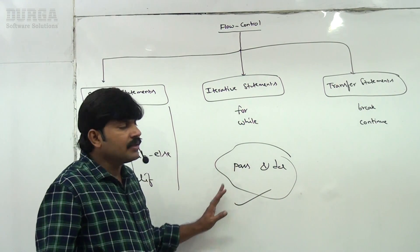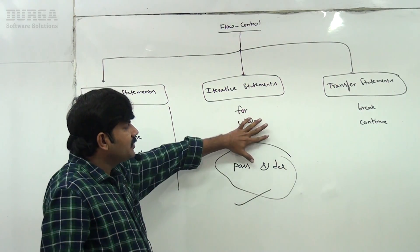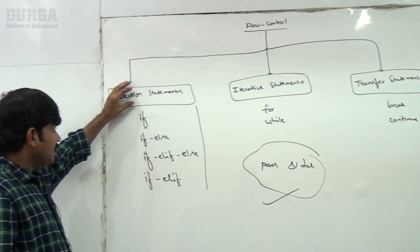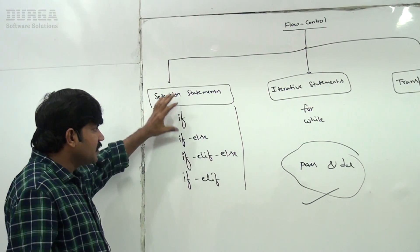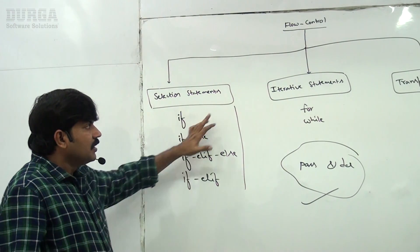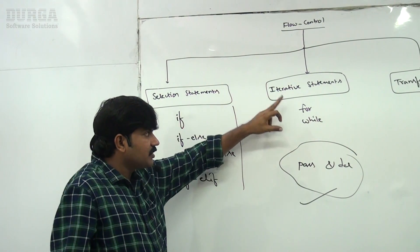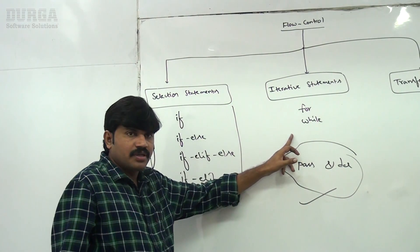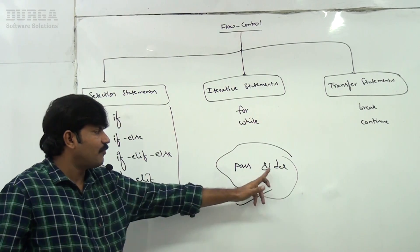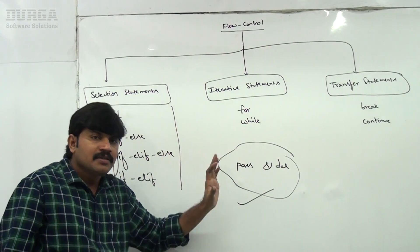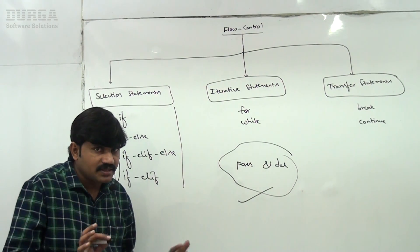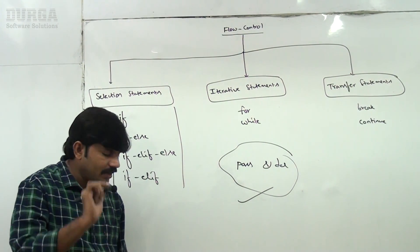So the agenda for flow control is: first, selection statements — if, else, elif; next, iterative statements — for and while; then transfer statements — break and continue; and finally, some special keywords like pass and del.